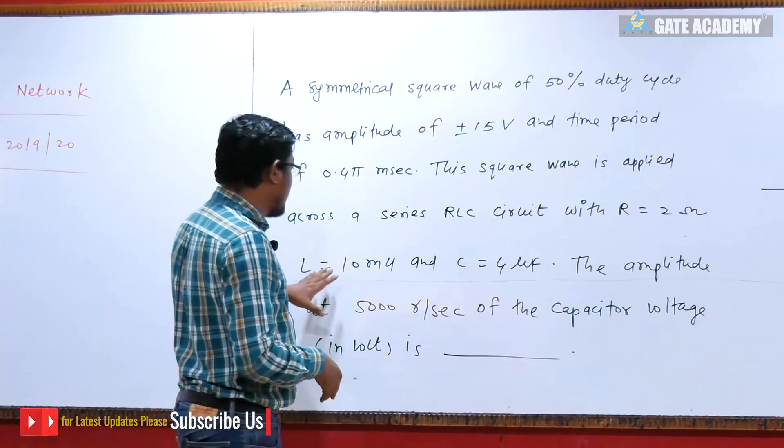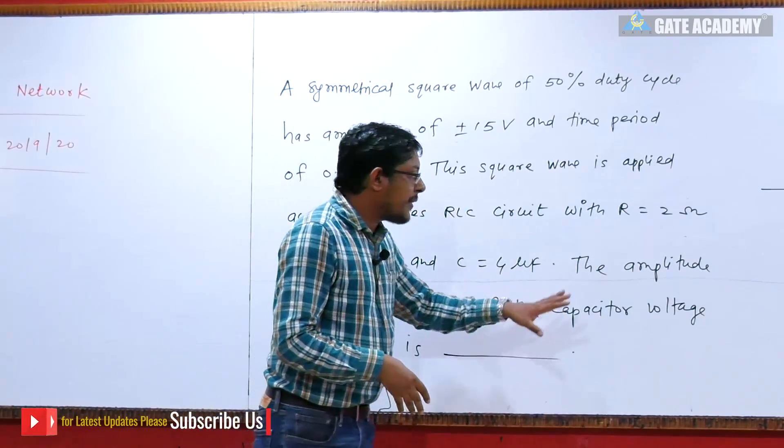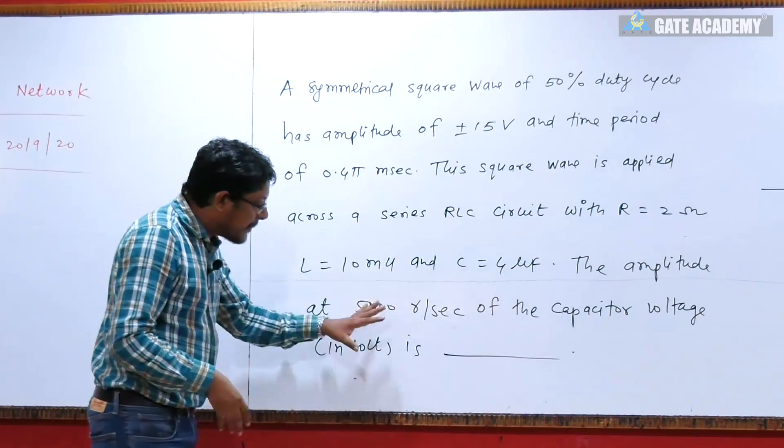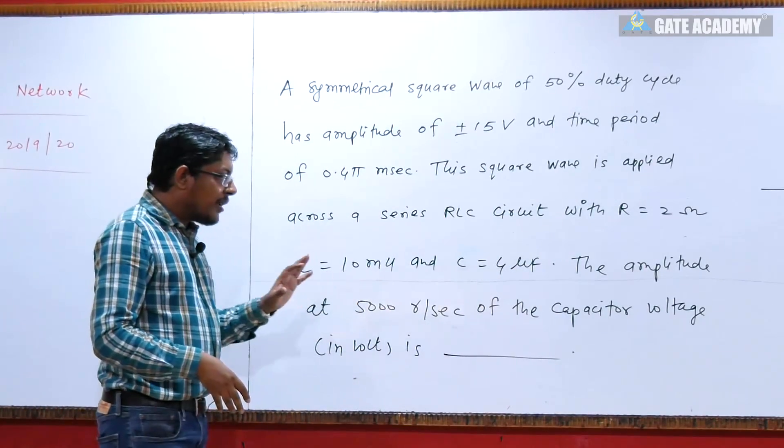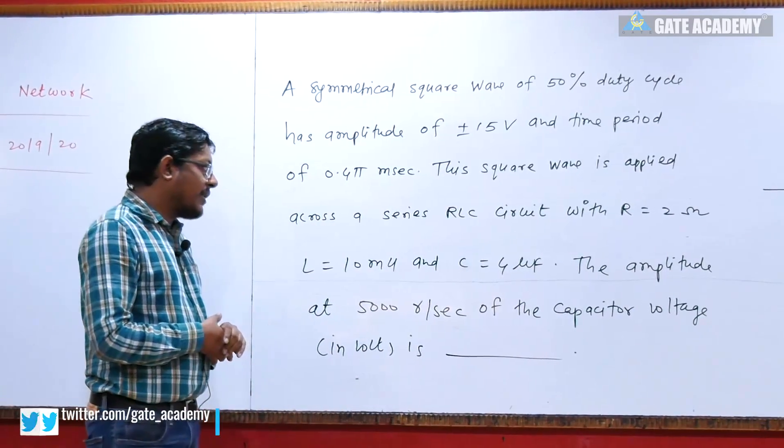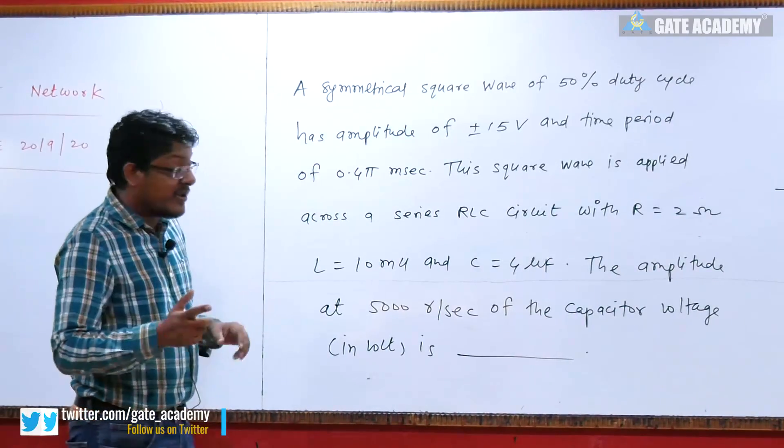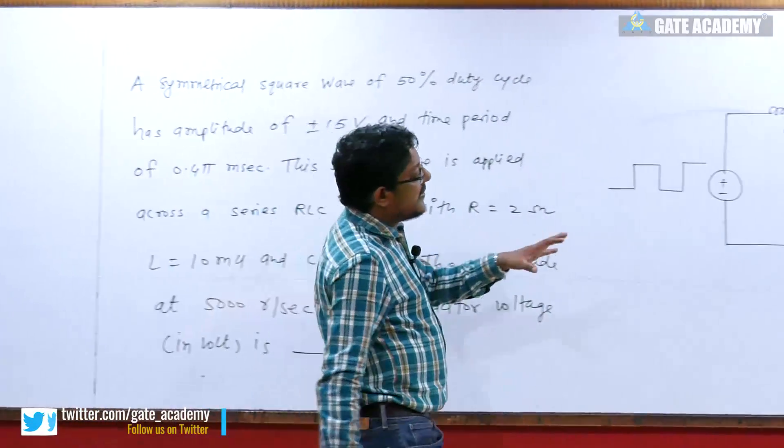RLC circuit with R equals 2 ohm, L equals 10 millihenry, C equals 4 microfarad. The amplitude at 5000 radian per second of the capacitor voltage. The amplitude at 5000 radian per second of the capacitor voltage in volts is.